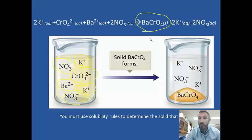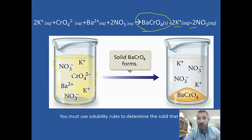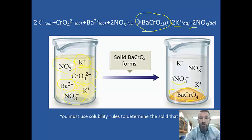Also, if you look at the products, notice that there are 2 potassiums and 2 nitrates for every barium chromate. Here we have 1 barium chromate represented, written on the bottom because it's a solid. But for that 1 barium chromate, we have 2 nitrates and also 2 potassiums — so there's a 1-to-2 ratio that exists there.